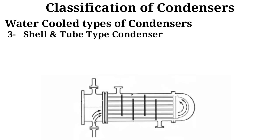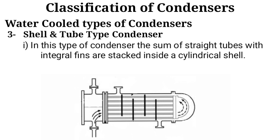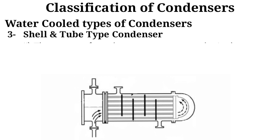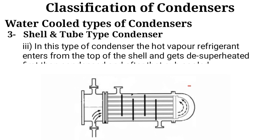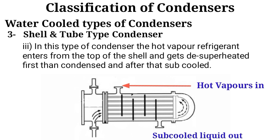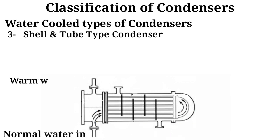In the shell and tube type condenser, a number of straight tubes with integral fins are stacked inside a cylindrical shell. These types of condensers are very popular in the refrigeration industry. The hot vapor refrigerant enters from the top of the shell and gets desuperheated first, then condensed and converted from vapor form to liquid form, and finally the liquid refrigerant is subcooled. It transfers the refrigerant heat to the water, warming the water at the outlet of the condenser shell.